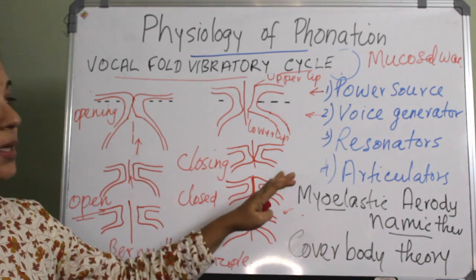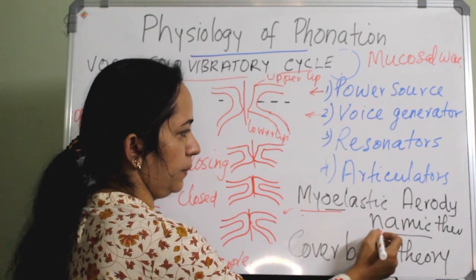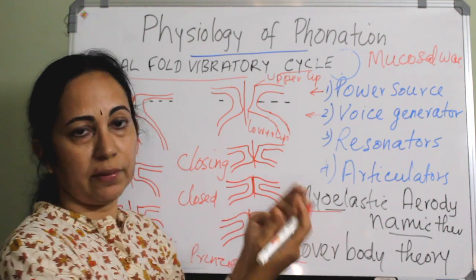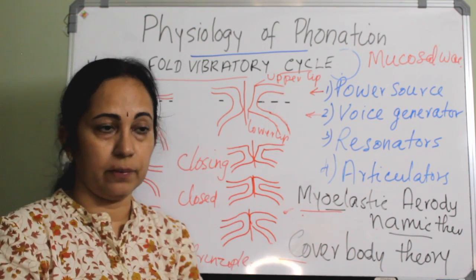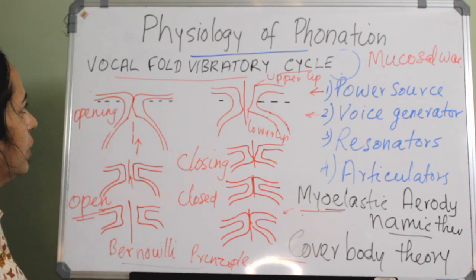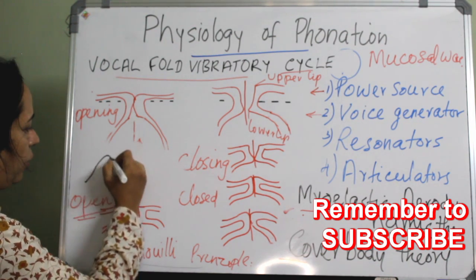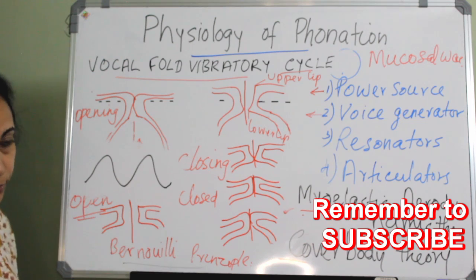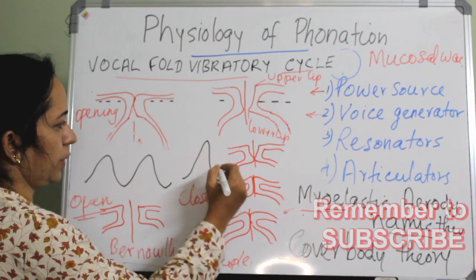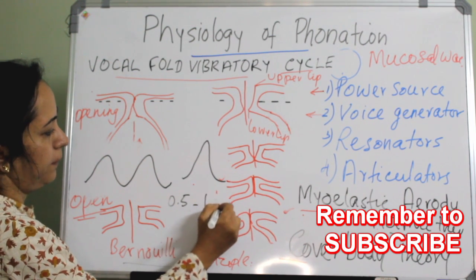This covers the second, glottic phase. You should know the myoelastic aerodynamic theory, the cover-body theory, and the mucosal wave pattern. In the vertical plane, this opening and closing causes a wave-like motion — the mucosal wave. The horizontal excursion of the mucosal wave can be called amplitude. In a normal person, the mucosal wave travels from inferior to superior, at a speed of around 0.5 to 1 meter per second.